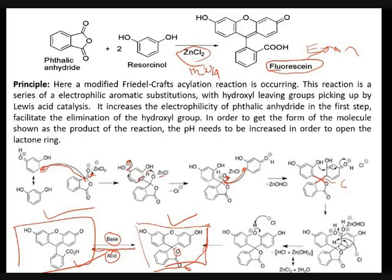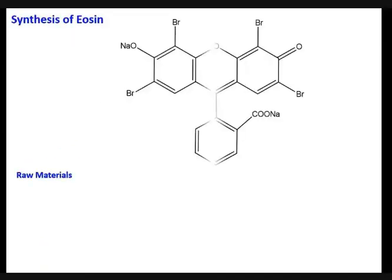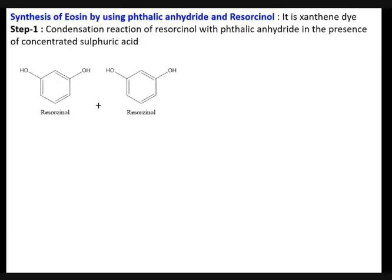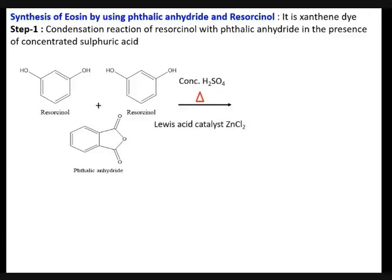There is only the elimination of the OH group in this step. This is a brief overview of the synthesis of fluorescein. The eosin structure involves resorcinol and phthalic anhydride — two moles of resorcinol and one mole of phthalic anhydride — reacted in concentrated medium. For the reaction you can use a Lewis acid catalyst.